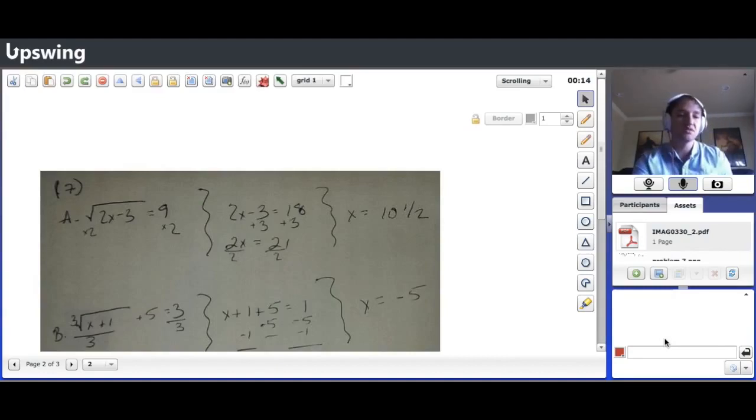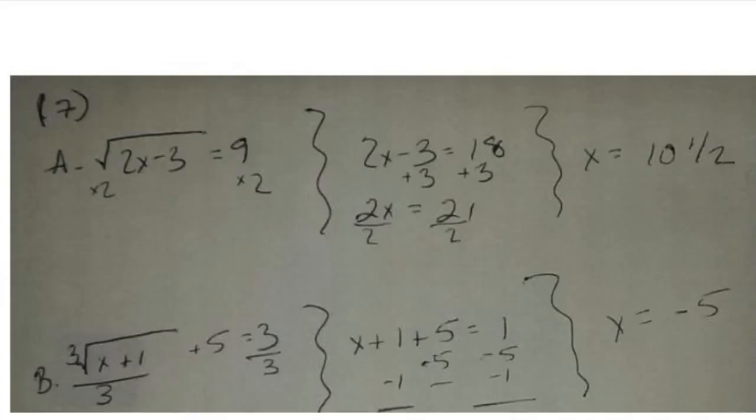And in order to get rid of that, you don't multiply by two, you're going to have to square both sides. So, here, I can write on the picture here and show you. So, in order to get rid of the square root, you know, take the 2X minus 3, square that. That's what the little two means, is you're squaring an equation. Then you're also going to be squaring the nine on this other side.